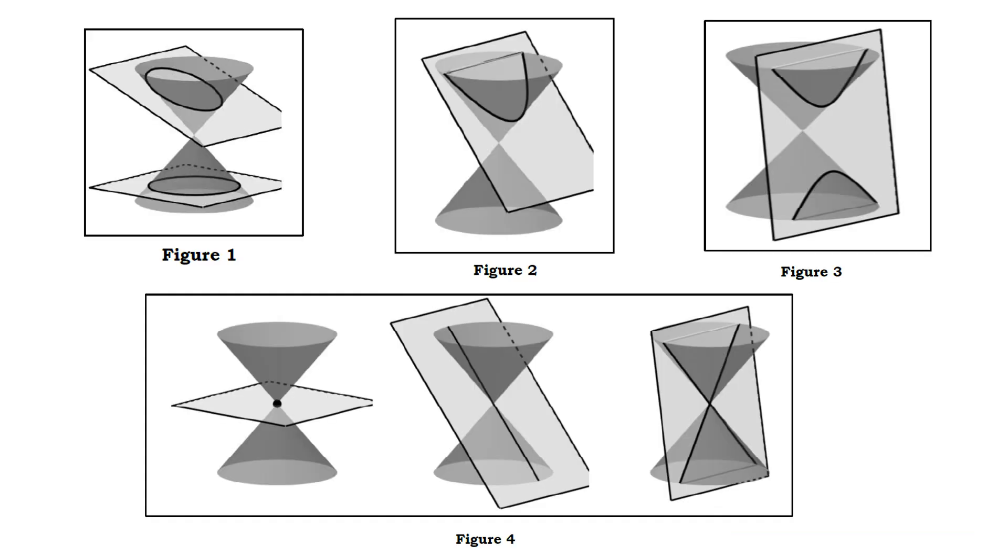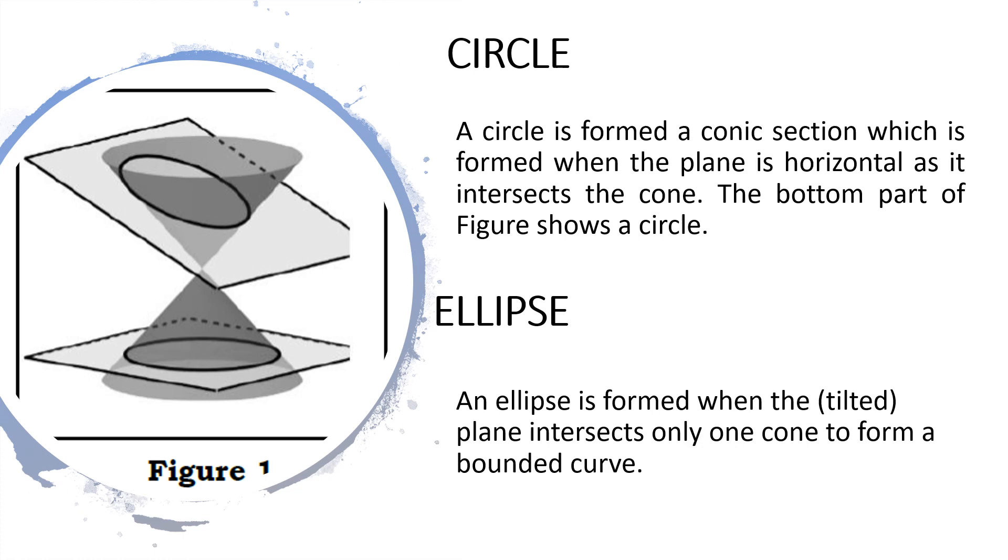Now let's take a look at the different conics. We have figures 1 to 3 showing the conic sections or sometimes called the non-degenerate conics, while figure 4 shows the degenerate conics. The first conic section is the circle. A circle is formed when the plane is horizontal as it intersects the cone. The bottom part of the figure shows a circle. There are many real-life representations of a circle. A regular round pizza, ferris wheel, and the face of a coin are among the numerous examples of a circle.